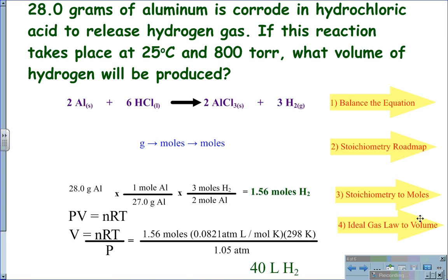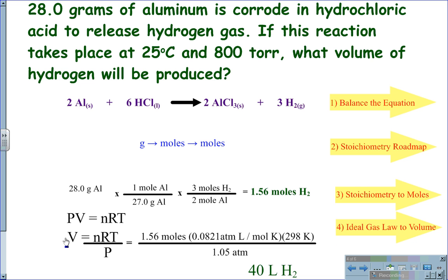We can then use that 1.56 moles of hydrogen in the ideal gas law to convert into volume. The original ideal gas law is PV equals NRT. Rearranging the equation to solve for V, we get V equals NRT over P. N is the mole value which we just calculated, 1.56. R is the gas law constant, 0.0821 atmospheres liters per mole Kelvin. We take the 25 degrees Celsius and convert it to 298 Kelvin. And we take the 800 torr, divide it by 760 and find that we have 1.5 atmospheres. Using these calculations, we get a volume value of hydrogen of 40 liters of hydrogen gas.